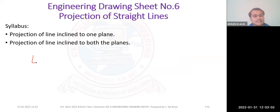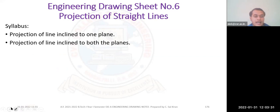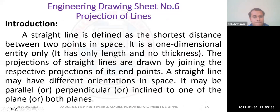Whenever a line is inclined to HP, we give the angle as theta. Whenever a line is inclined to VP, we assume the angle as phi (beta). We will be discussing inclination angles in the upcoming topics.